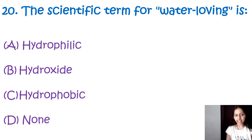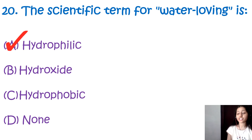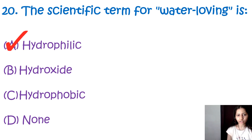Question number 20: The scientific term for 'water loving' is — hydrophilic, hydroxide, hydrophobic, or none. The correct option is A, hydrophilic. The scientific term for water loving is hydrophilic, which describes a substance or molecule that has a strong affinity towards water and tends to dissolve in or be attracted towards water.